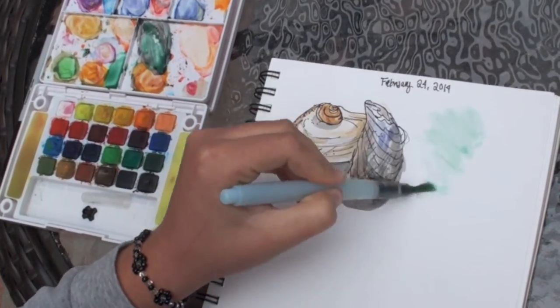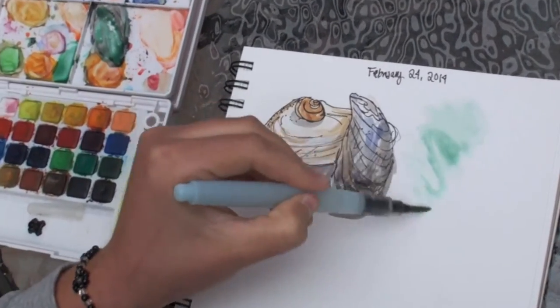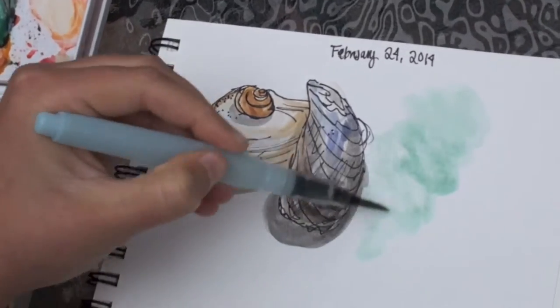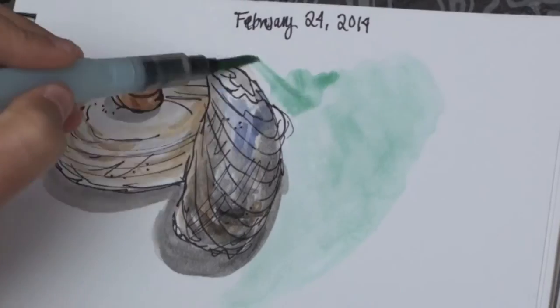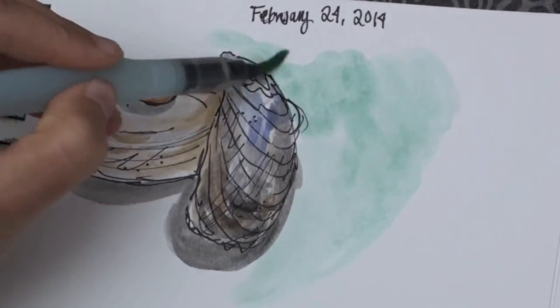And once this is dry, it dries very quickly. She can write right on top of the color she's putting in for a very beautiful journal entry.